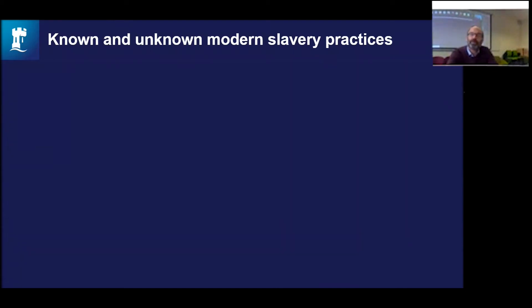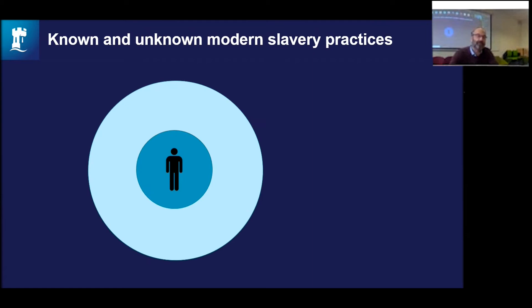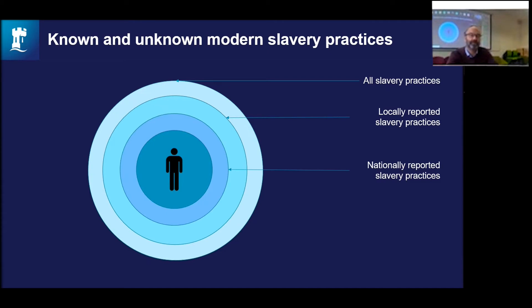Starting with the fundamental problem of unobservability, there are a couple of stylized facts to think about. When things are reported to us, there are known and unknown practices — what I call known and unknown modern slavery practices. A dark blue circle might tell us something about what we know at one level. We know slavery practices exist, but many are reported and unreported. Some are locally reported, some nationally reported, some internationally reported.